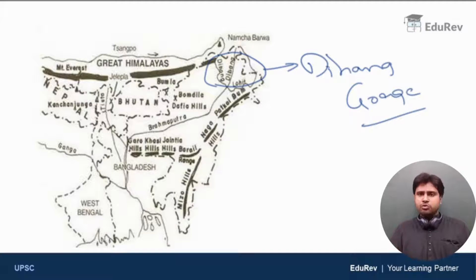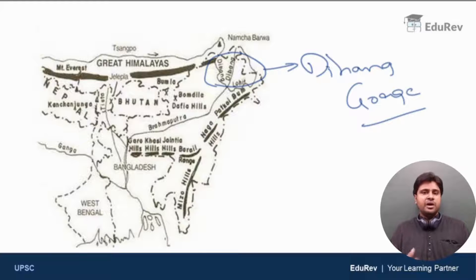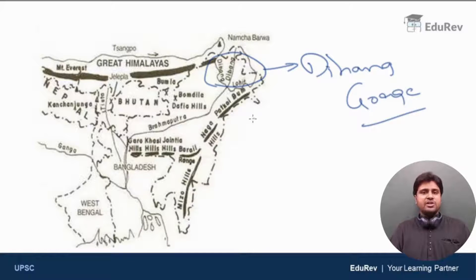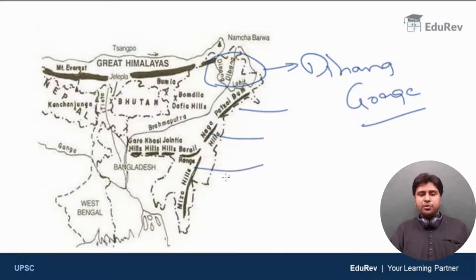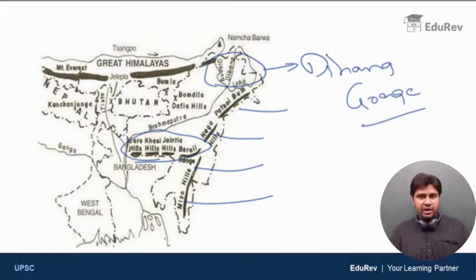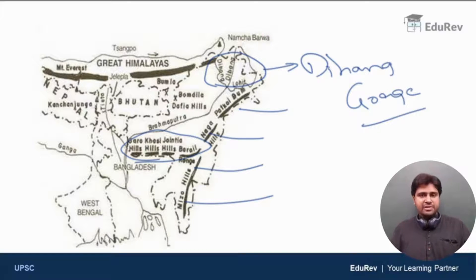Going through the map one more time for clarity: the Great Himalayas have crossed the Dihang Gorge in Assam, formed by the river Dihang or Brahmaputra, and have taken a Syntaxial Bend southwards. They have formed a chain of low hills — Patkai Bum, then Naga Hills, Manipur Hills, Mizo Hills, and to the west the hills of Garo, Khasi, and Jaintia in the state of Meghalaya. All these hills belong to the Eastern Hills or Purwanchal.